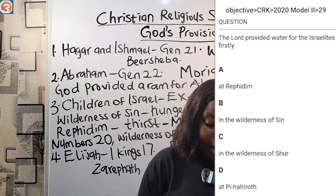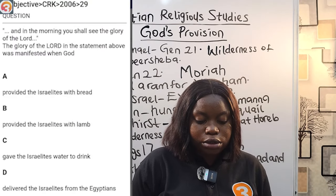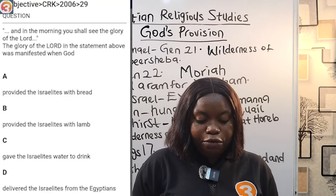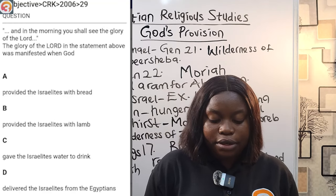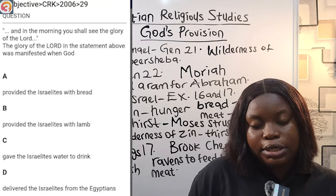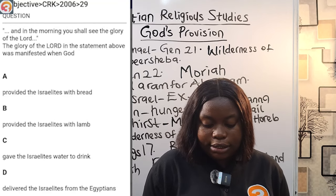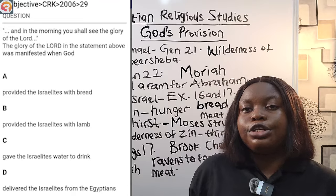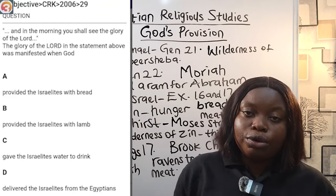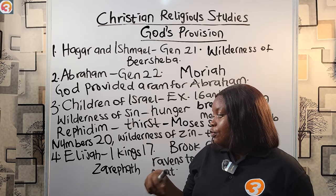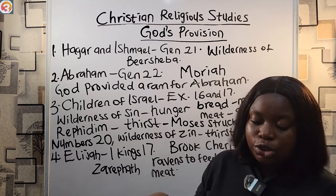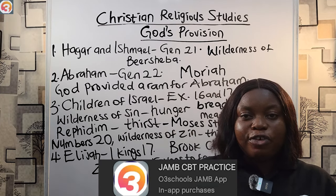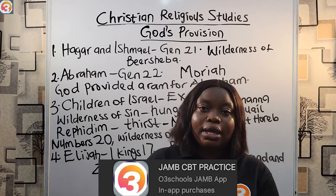Another question: 'And in the morning you shall see the glory of the Lord.' The glory of the Lord in this statement was manifested when God — A. Provided the Israelites with bread, B. Provided the Israelites with lamb, C. Gave the Israelites water to drink, D. Delivered the Israelites from the Egyptians. The answer is A — bread. Moses told them they would see the glory of the Lord in the morning, and that morning God rained down bread from heaven. Download the O3Schools Jam app to find more questions on this topic.